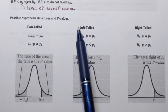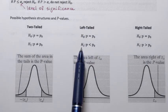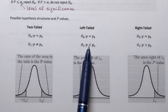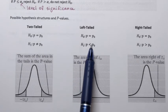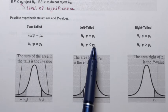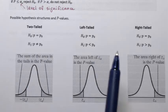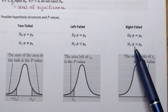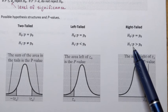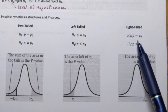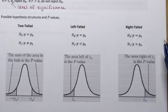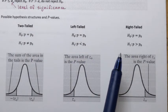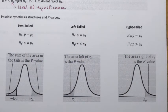The left-tail hypothesis structure is used when the alternative hypothesis uses the less-than sign — stating that the population proportion is less than the value in the null hypothesis. The right-tail structure is used when the alternative hypothesis uses the greater-than sign, stating that the population proportion is greater than what is stated in the null hypothesis. Knowing the hypothesis structure is important whether you do it by hand or on the calculator.